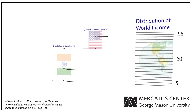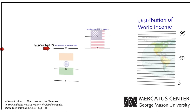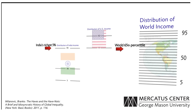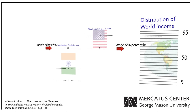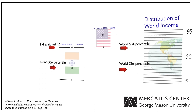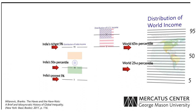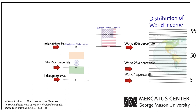Contrast this with India, where that country's highest earners — the top 5% of households — are in the 65th percentile in terms of global income. The median Indian household is in the 23rd percentile globally, while the bottom 5% of Indian households are among the poorest 1% globally.